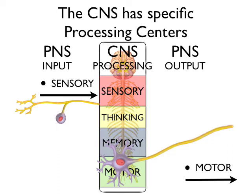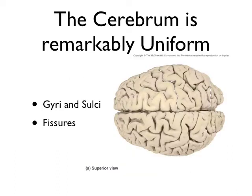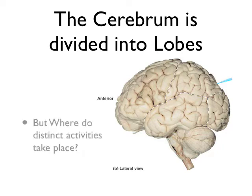We know there are these places, but where are they? The cerebrum is remarkably uniform — you see fissures, gyri, and sulci, but there's no way to tell by looking whether something is sensory, motor, where you think, or where you see. The cerebrum is divided into lobes, but where do distinct activities like sensory and motor actions take place, and how do we know?